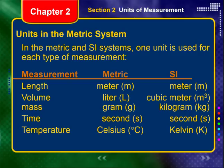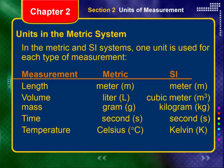When we look at units, one unit is used for each type of measurement. For length, both the metric and SI systems use the meter. For volume, the metric system uses the liter while the SI system uses the cubic meter. For mass, the metric system uses grams and the SI system uses kilograms. Time is measured in seconds in both systems. For temperature, the metric system uses degrees Celsius while the SI system uses Kelvins — you do not say degrees Kelvin, just Kelvins.